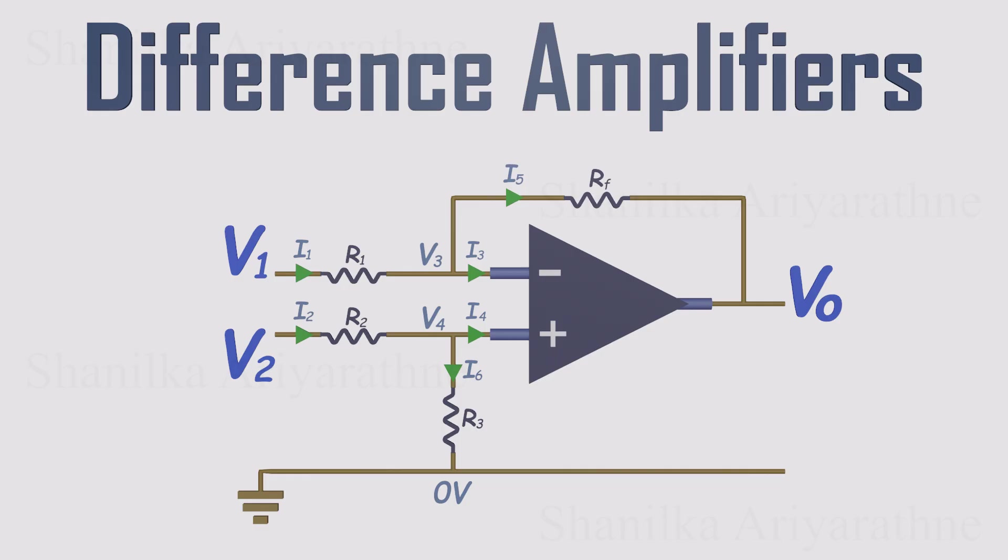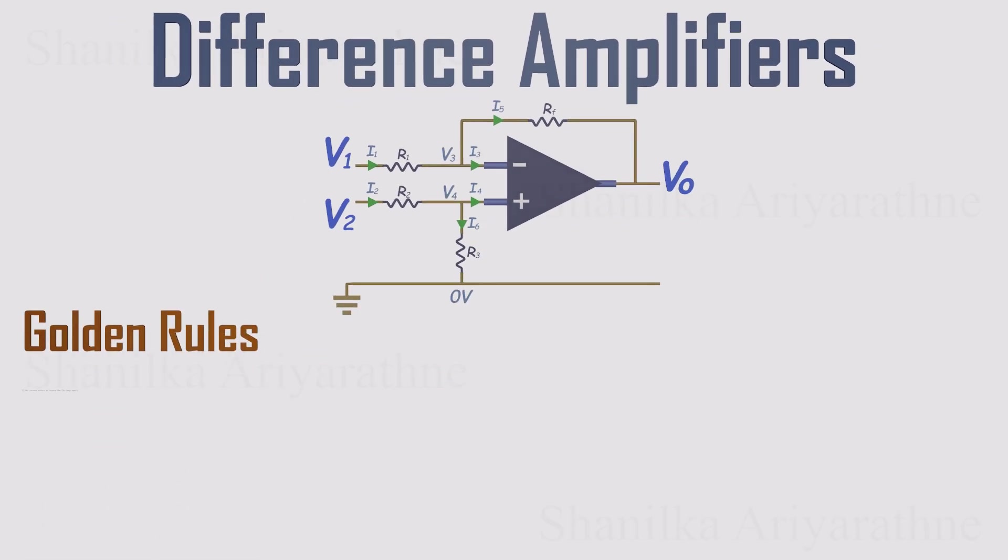Because this circuit uses negative feedback, the golden rules apply. Rule 1. No current flows into the op-amp inputs. That means I3 and I4 are both 0.